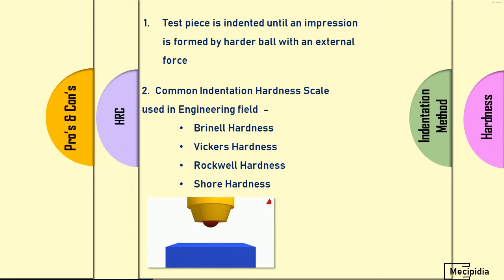The ball with external force is applied on the test piece, creating an impression called indentation. That indentation diameter is measured and evaluated in the indentation hardness scale.